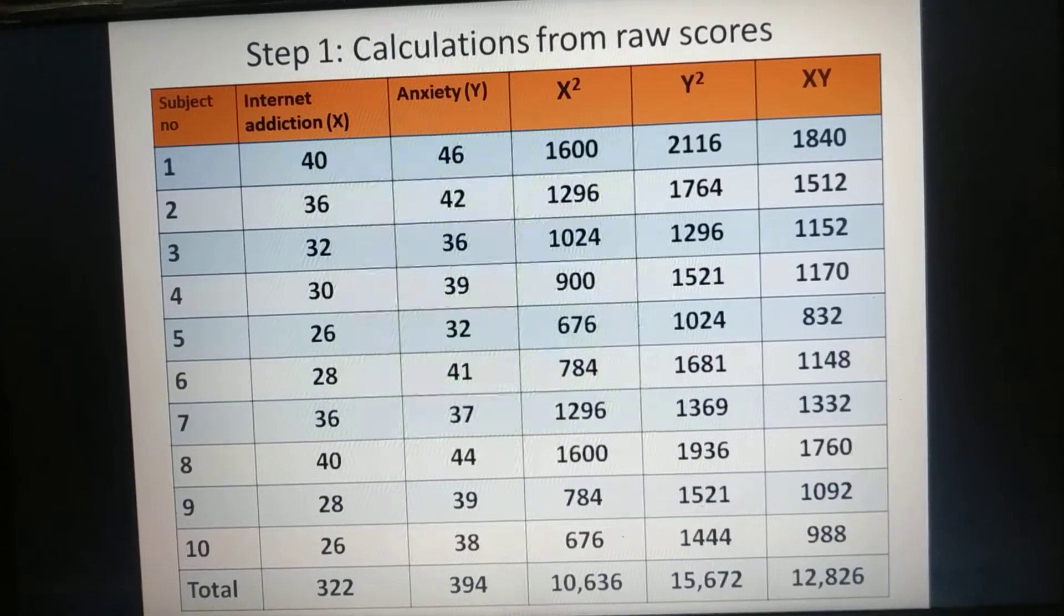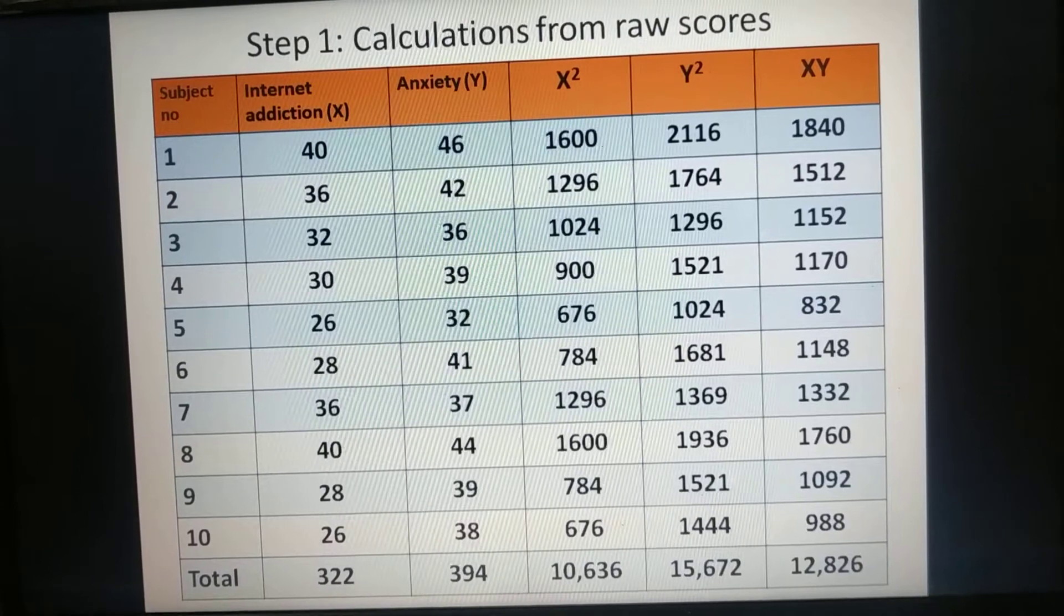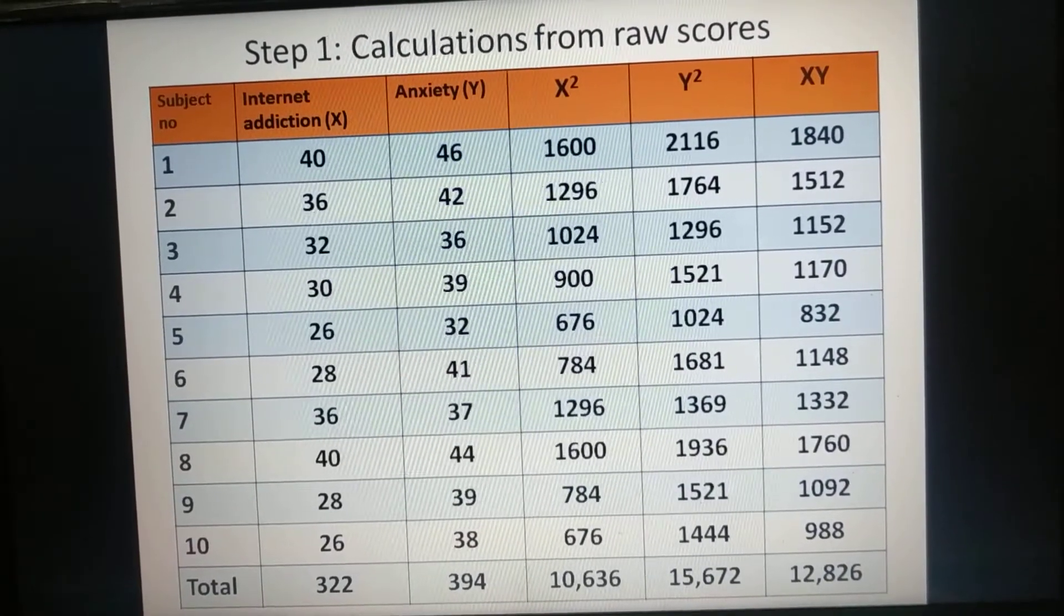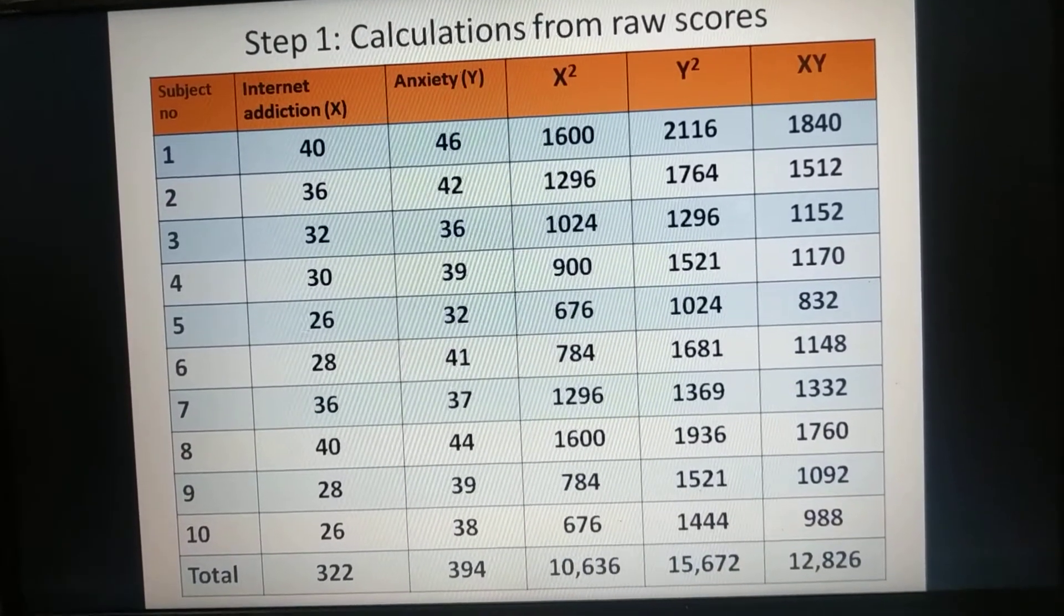Step 1. Calculation of capital X square, Y square and XY. First add values of internet addiction i.e. X, total is 322.